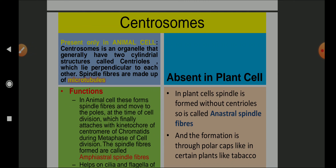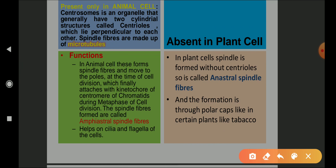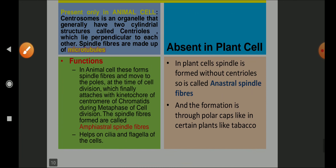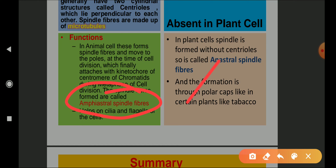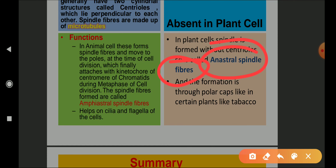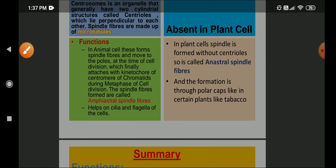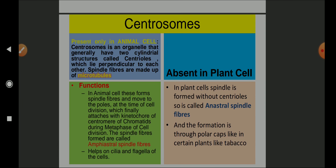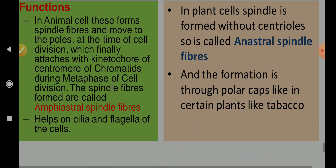There is a difference between what happens in animal cells and plant cells regarding the centrosome. Spindle fibers are made up of microtubules. The centrosome in animal cells is considered to be amphiastral, while in plants it is considered to be anastral spindle fibers. Some plants like tobacco form spindle fibers with the help of polar caps — please keep this in mind.